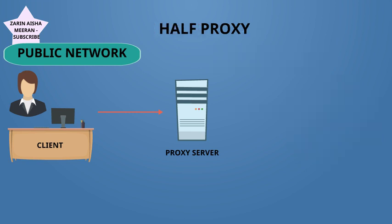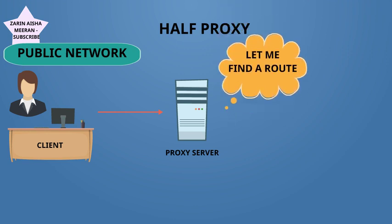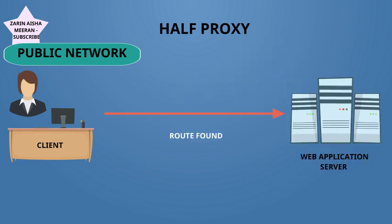This is where it starts to get a little fun. A half proxy is one that would allow the proxy to examine the request before determining where to send it. And once the proxy determines where to route the request, the connection between the client and the server is then stitched together.